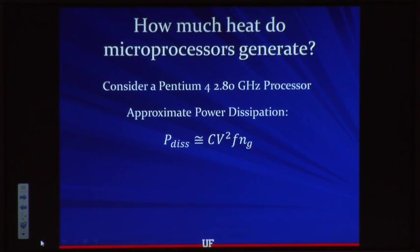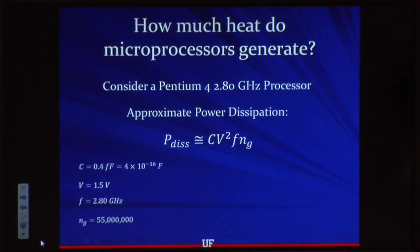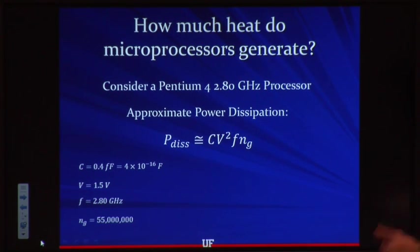To get an approximate answer, we can say the power dissipation is equal to the capacitance times the voltage squared times the frequency at which it's charging and discharging. Then for the total heat dissipation, we multiply that by the number of gates. The characteristic capacitance for microprocessors is on the order of femtofarads — times 10 to the negative 15th. With clock rates on the order of gigahertz and tens of millions of gates on a single processor, we get substantial heat dissipation.